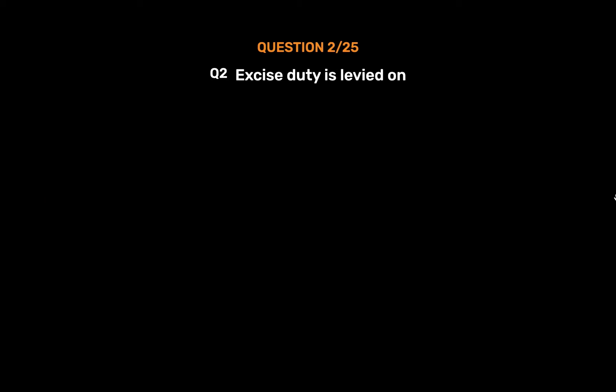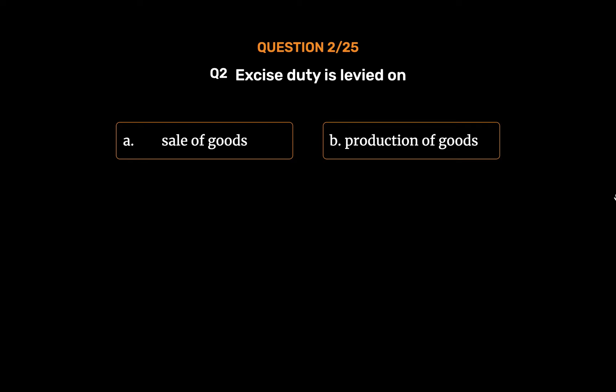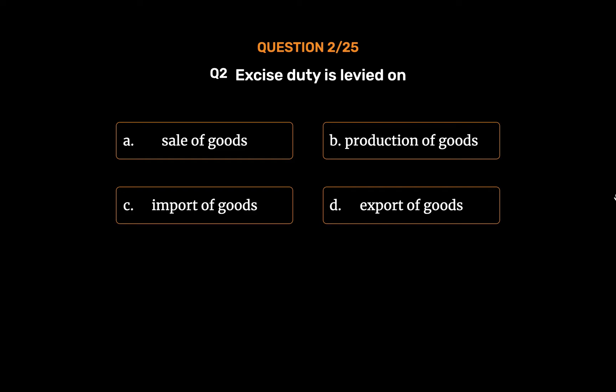Question No. 2. Excise duty is levied on. Option A: Sale of goods. Option B: Production of goods. Option C: Import of goods. Option D: Export of goods.